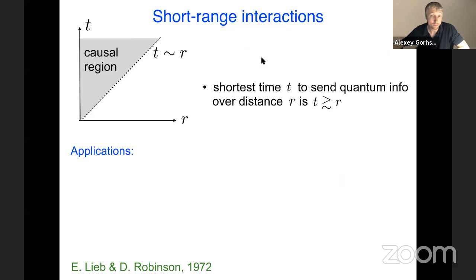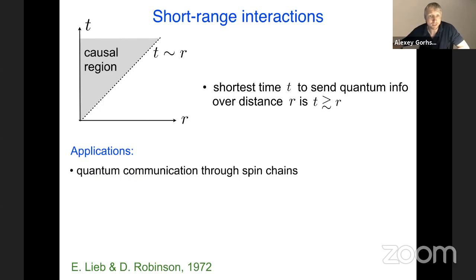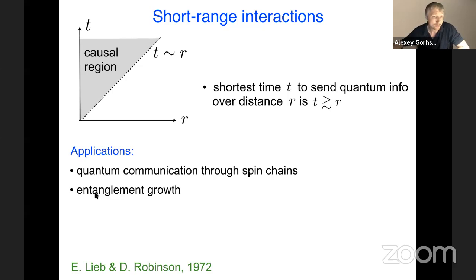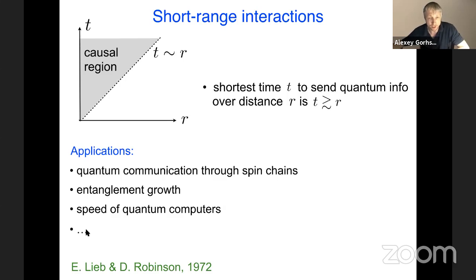Given how general this bound is, it has many applications: quantum communication through spin chains, constraining the growth of entanglement in quantum systems, speeds of quantum computers, and many other things we'll mention later in the talk.